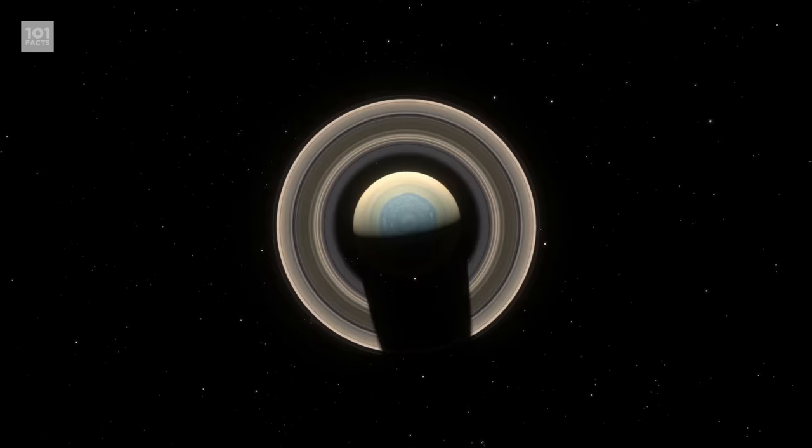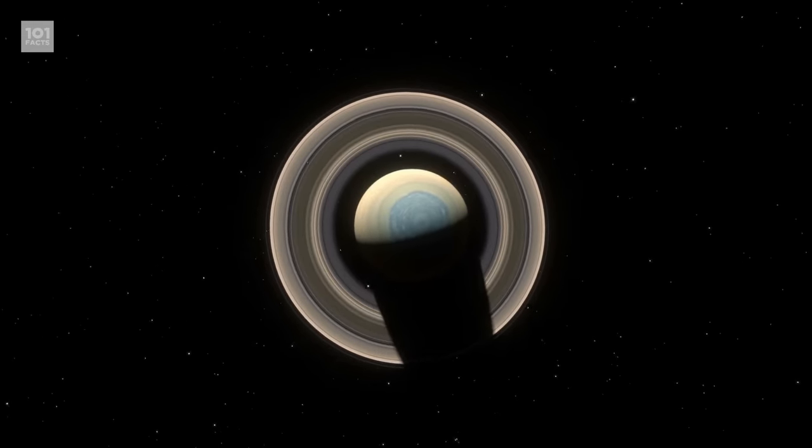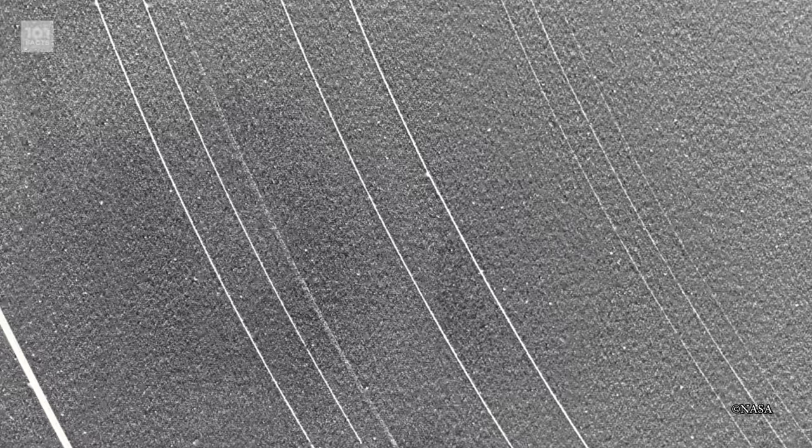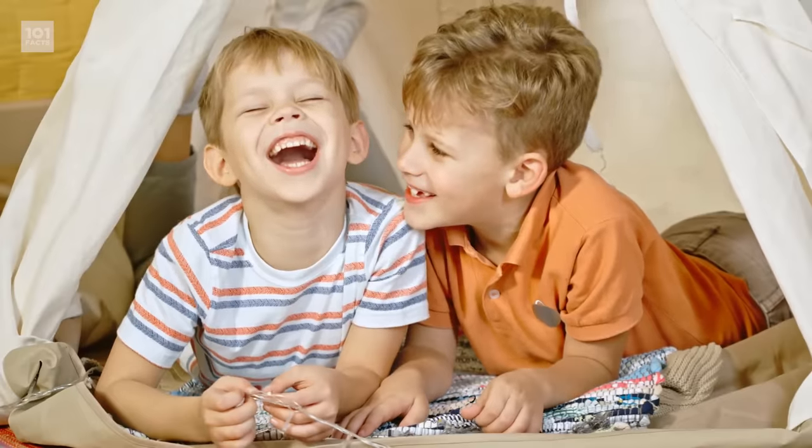Much like Saturn, the next planet in our solar system, Uranus, also has 13 rings, but they're super faint and very narrow and dark, so they can hardly be seen. You thought we were going to make a joke about a butt, didn't you? Well, we're far too mature for that here at 101 Facts. Haha, Uranus.